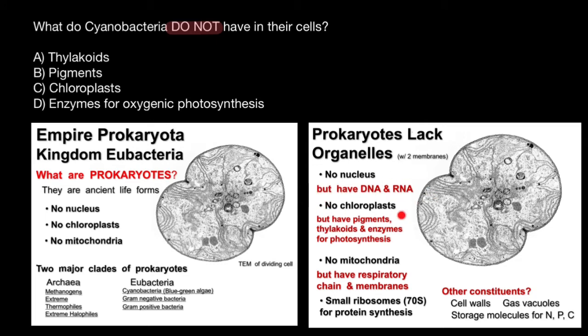Cyanobacteria don't have chloroplasts, but do have pigments, thylakoids, and enzymes for photosynthesis. Blue-green algae is a colony of photosynthetic bacteria. They don't have mitochondria, but have a respiratory chain and membranes. As you see here, these membranes are needed in order to separate those parts of the cell which metabolize and those which catabolize.